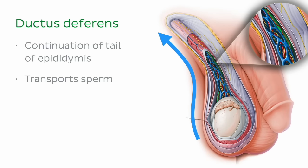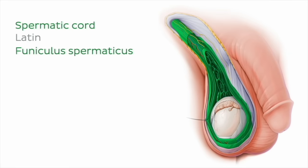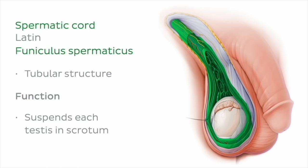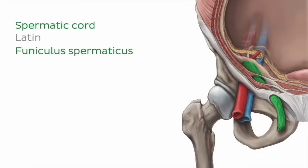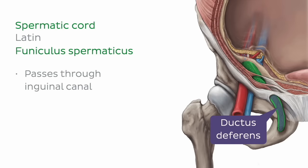Let's briefly pause here to talk about the spermatic cord. This tubular structure suspends each testis in the scrotum. This cord traverses the abdominal wall by passing through the inguinal canal on its way to and from the testes, and primarily contains the ductus deferens along with the associated neurovasculature.